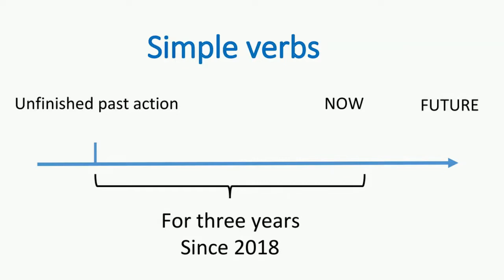Simple verbs may be used for unfinished past actions which have lasted until today and may keep going in the future. For example: I've been writing my thesis for three years. I've been writing my thesis since 2019. Now, I'm still writing my thesis, and I may write it next year also.